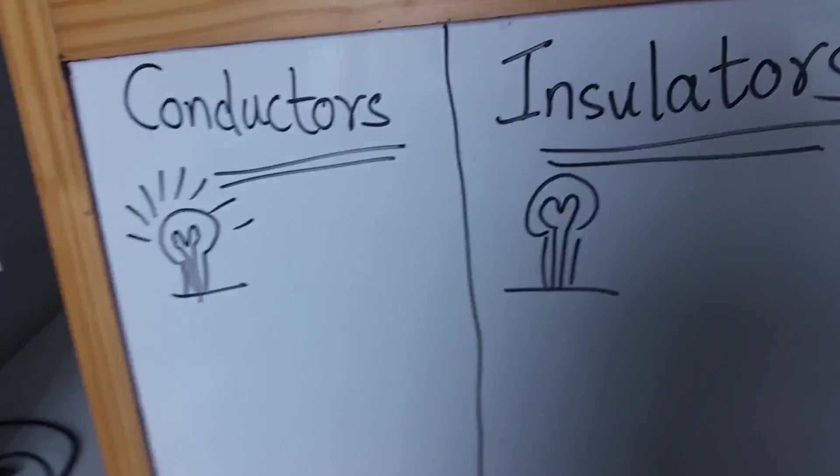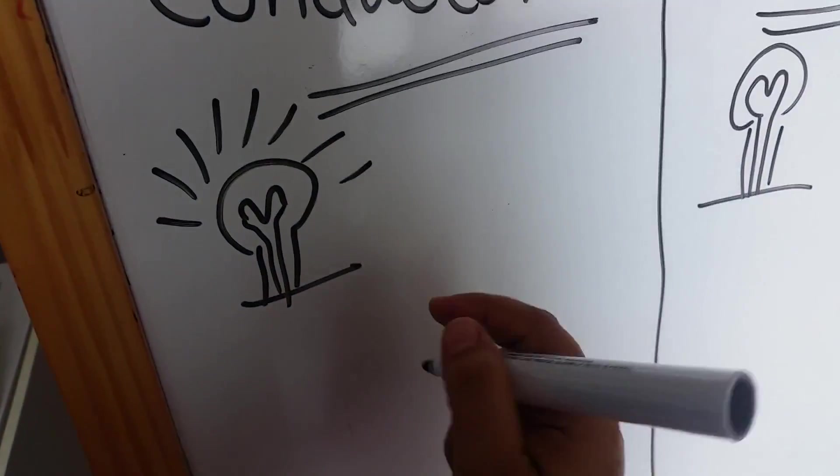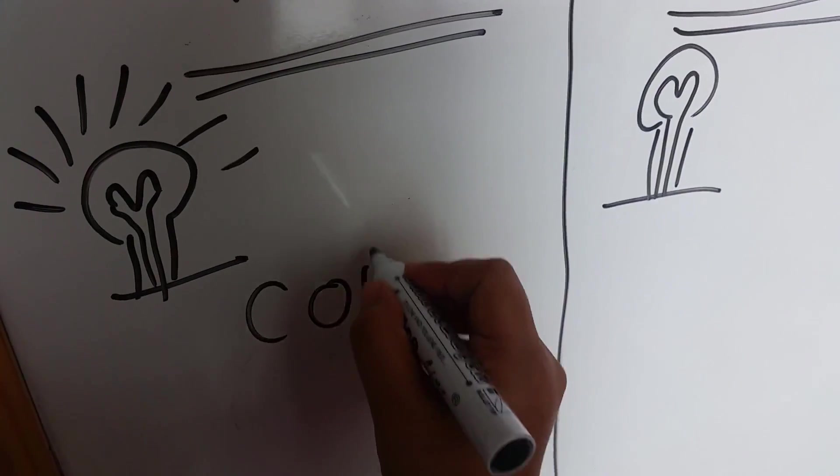What is a coin Champ? A conductor. And a coin is made of? Metal. Metal. Okay.